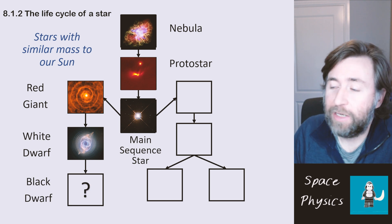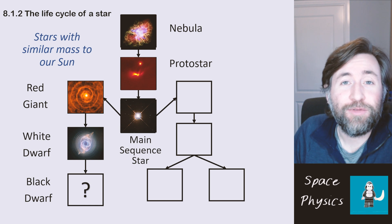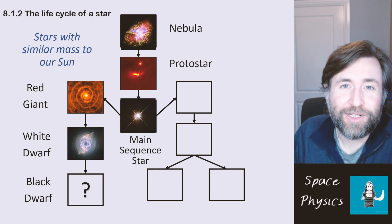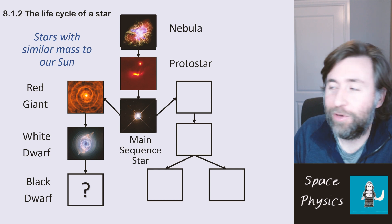And we would end up with something called a black dwarf. A black dwarf is something that we haven't seen before because the universe isn't quite old enough for this to have occurred yet. But that's the theory. That's what we expect to happen. All fusion would stop and it will give out no more light.